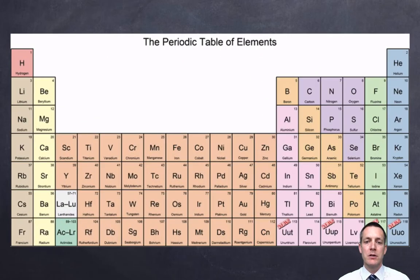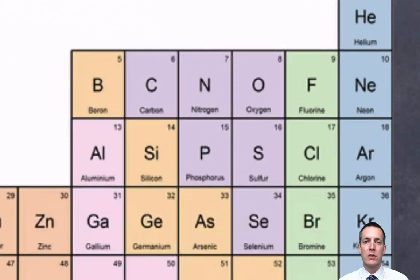This particular periodic table is unusual because it's only got one number in each box. The point of showing you this one is so that we can concentrate on the number that is going up by one every single time. If we focus on these elements — boron, carbon, nitrogen, oxygen, fluorine, and neon — we can see a number going up by one each time. It doesn't matter where it appears in the box; what matters is that it goes up by one each time.